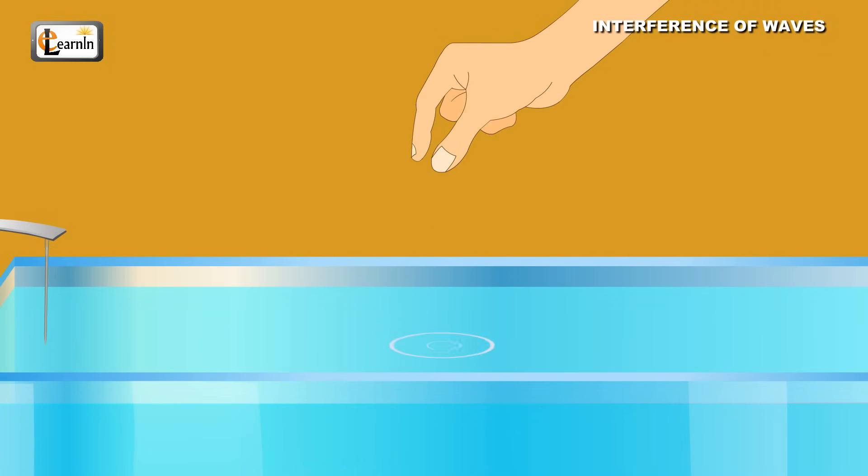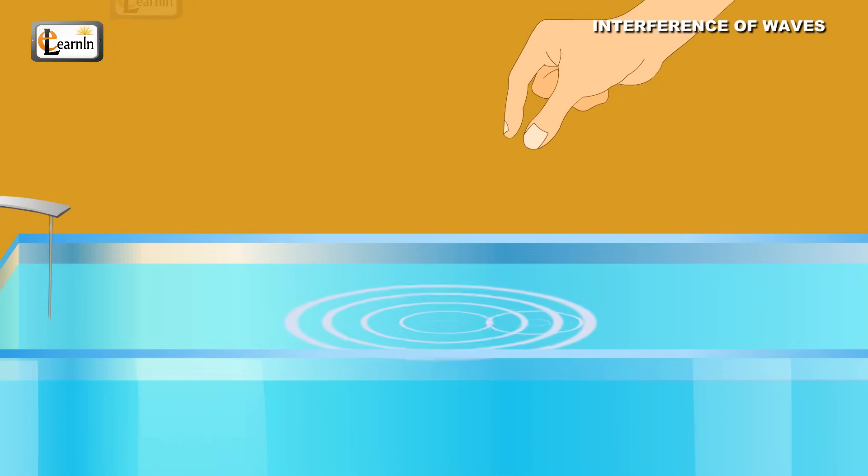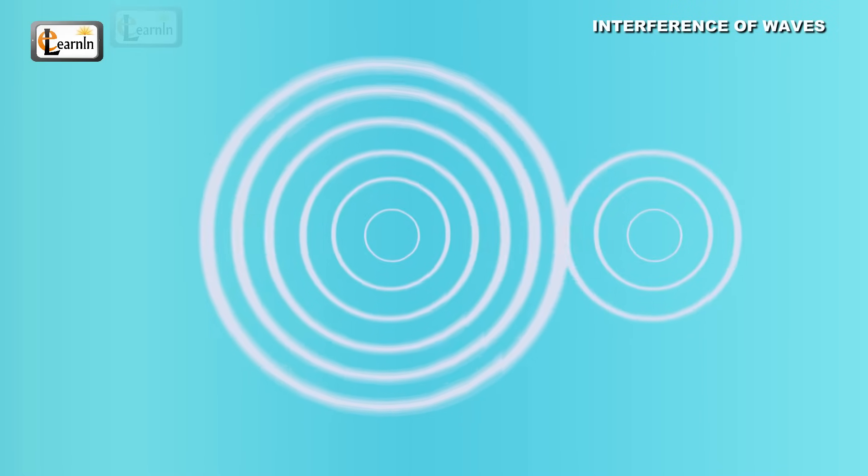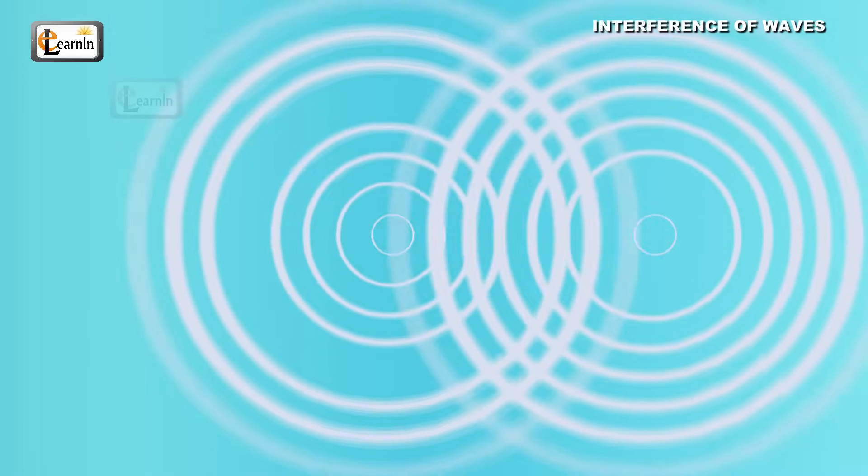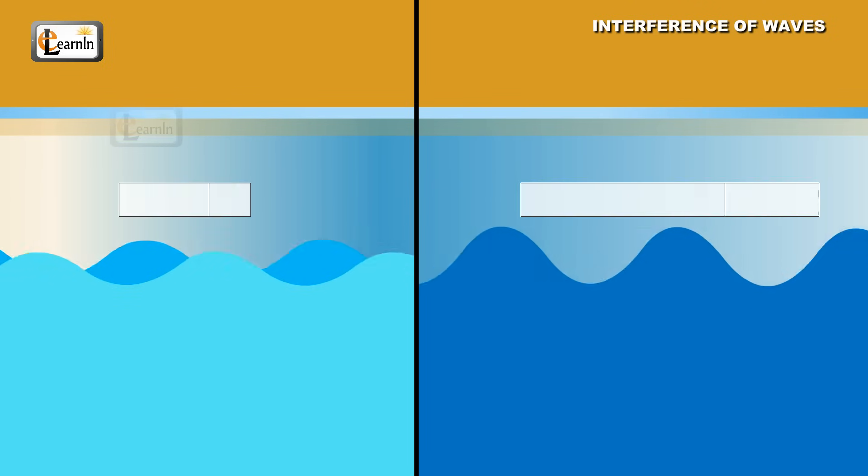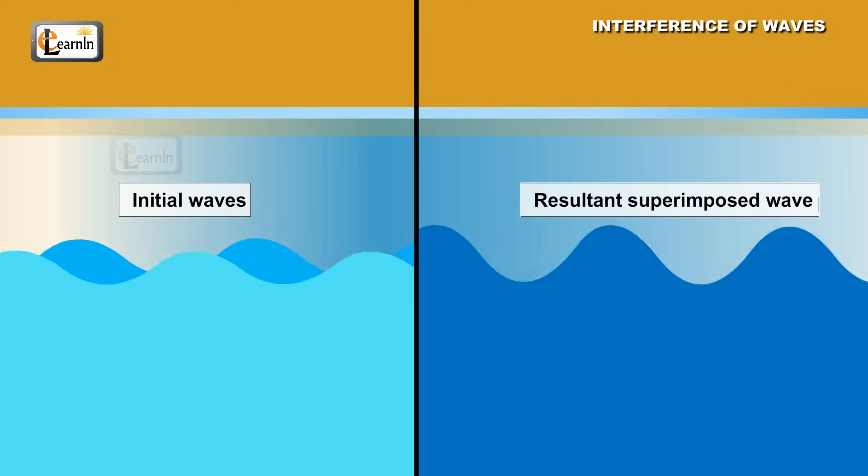When we drop a pin in a tank, we see some circular waves. When another pin is dropped, we see some more waves. These waves travel in the same tank, and at one time or another, they superimpose on each other. The resultant wave would have an amplitude which is the sum of the displacement due to the individual waves.